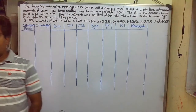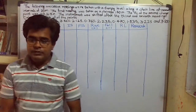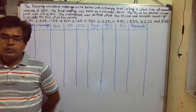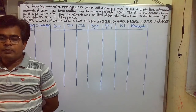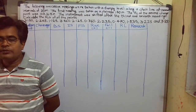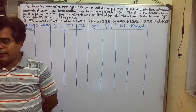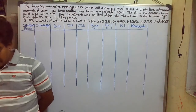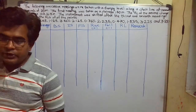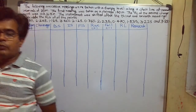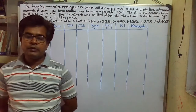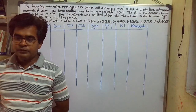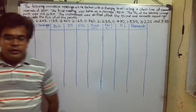In the last lecture, we have seen how to find out the RL of different points by using the height of instrument method and rise and fall method. In that lecture, I have explained in detail. Now, we will see some different varieties of numericals.